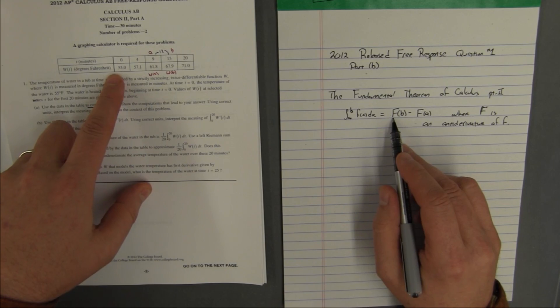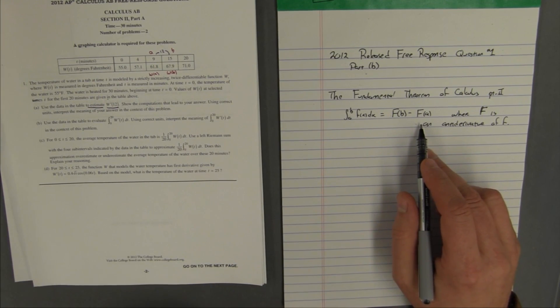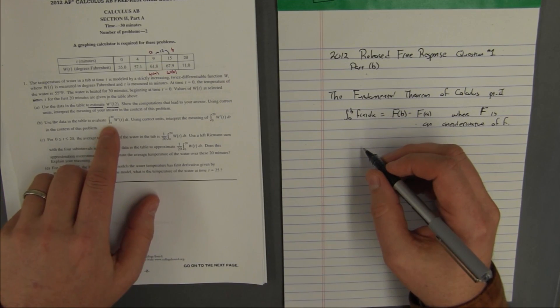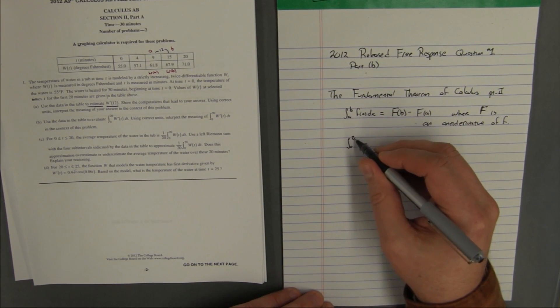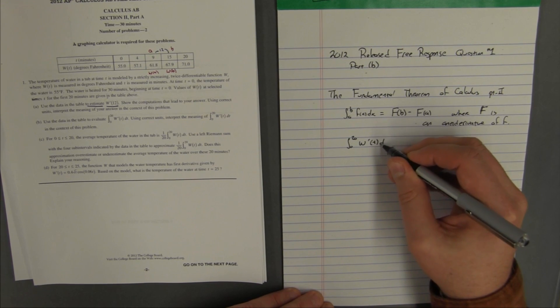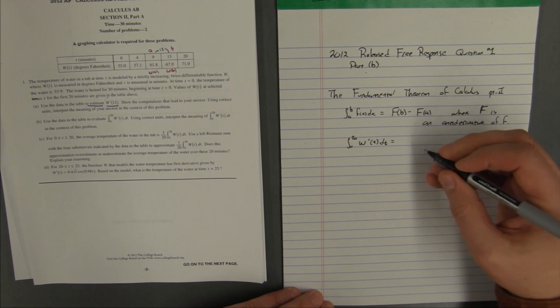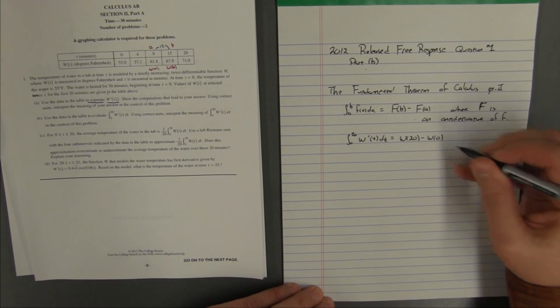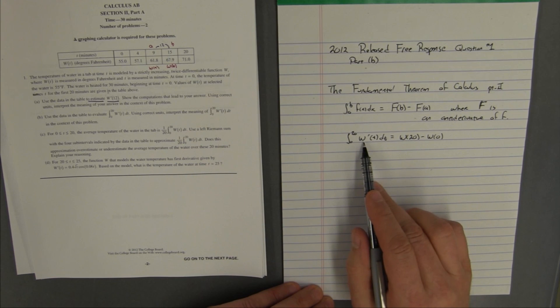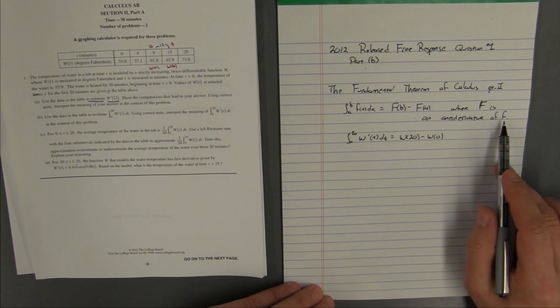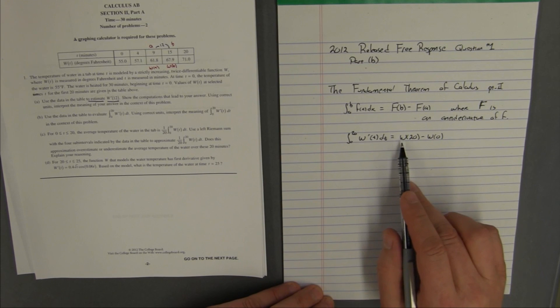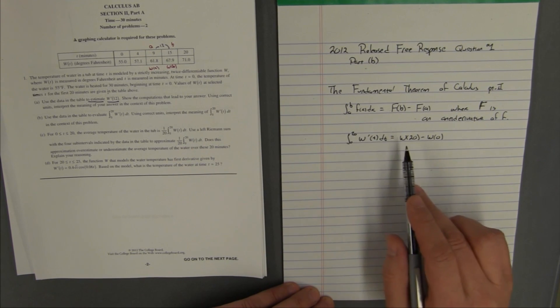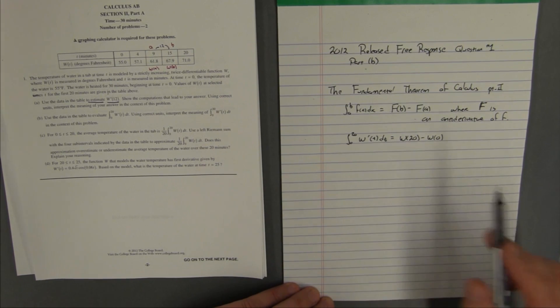and we have information about w. So, if we put this integral in terms of the function that we have here, and in fact this integral, we can say that the integral from 0 to 20 of w prime of t dt is equal to w of 20 minus w of 0. Because w is an antiderivative of w prime, just like capital F is an antiderivative of small f. And the reason that w is an antiderivative of w prime is the simple reason that w prime is the derivative of w. Therefore, w is the antiderivative of w prime.